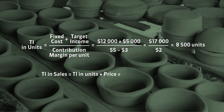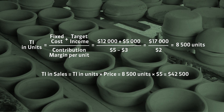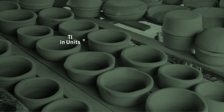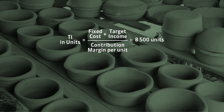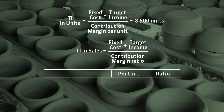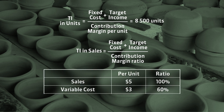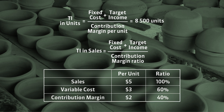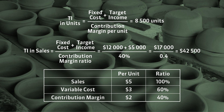We can do this in two ways. The first way is to use the target income in units and multiply by the price. As you can see, to attain our target income we have to sell pots for forty-two thousand five hundred dollars. The second way is to substitute the data into the formula using the contribution margin ratio. Let's calculate it. As you can see, the result is exactly the same.